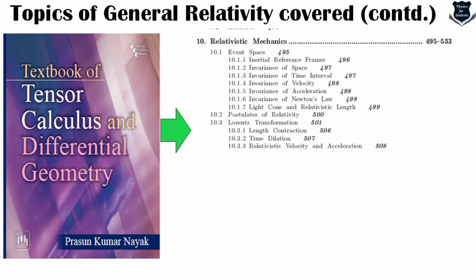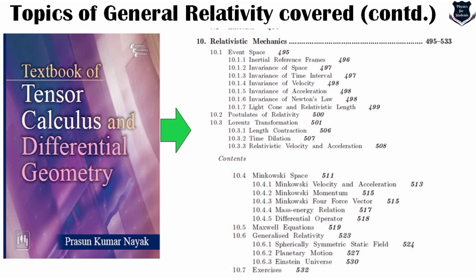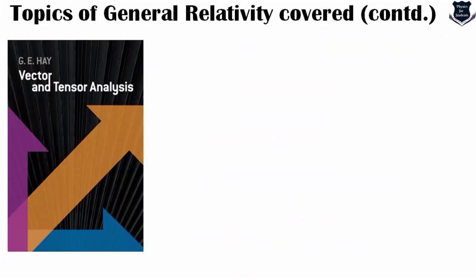Further in Nayak's book we get relativistic mechanics, the entire Minkowski space, generalized relativity, and Maxwell's equations. Relativistic mechanics covers the invariance of velocity, acceleration, and similar topics. The Minkowski space — the flat spacetime important to special relativity — is also covered. So Prasun Kumar Nayak's Tensor Calculus and Differential Geometry is a must-read book.